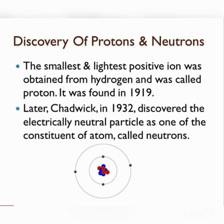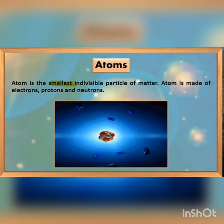The smallest and lightest positive ion was obtained from hydrogen and was called proton. It was found in 1919 by Goldstein. Later, Chadwick in 1932 discovered the electrically neutral particle as one of the constituents of the atom and called it the neutron. Thus, the atom is the smallest indivisible particle of matter and is made up of electrons, protons, and neutrons.